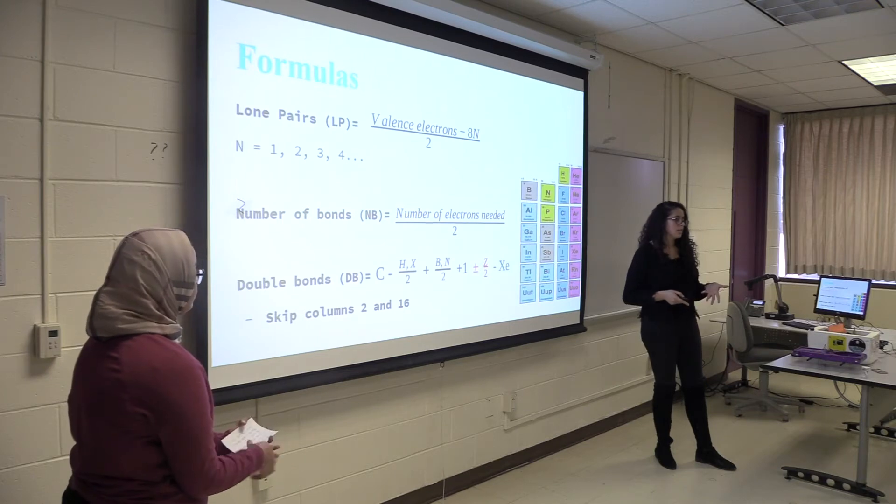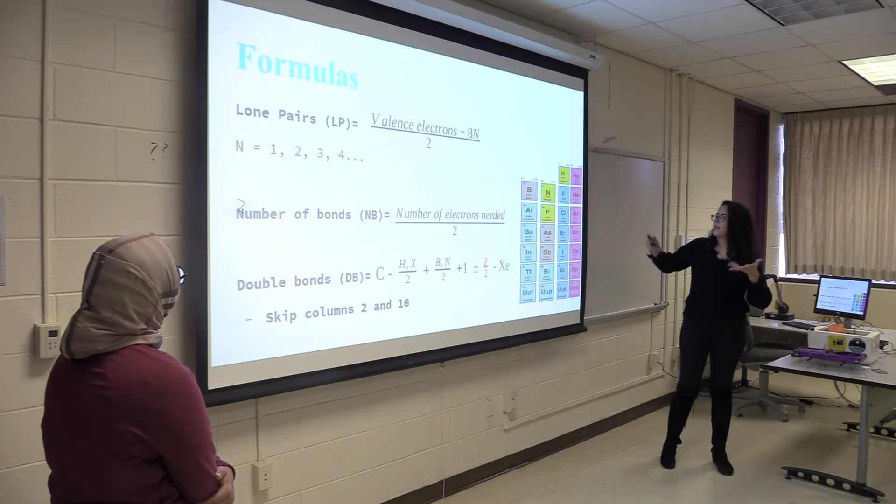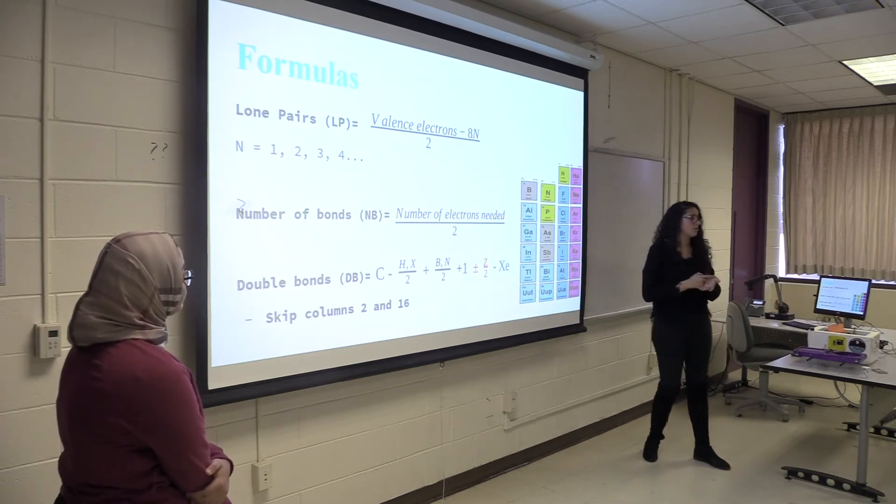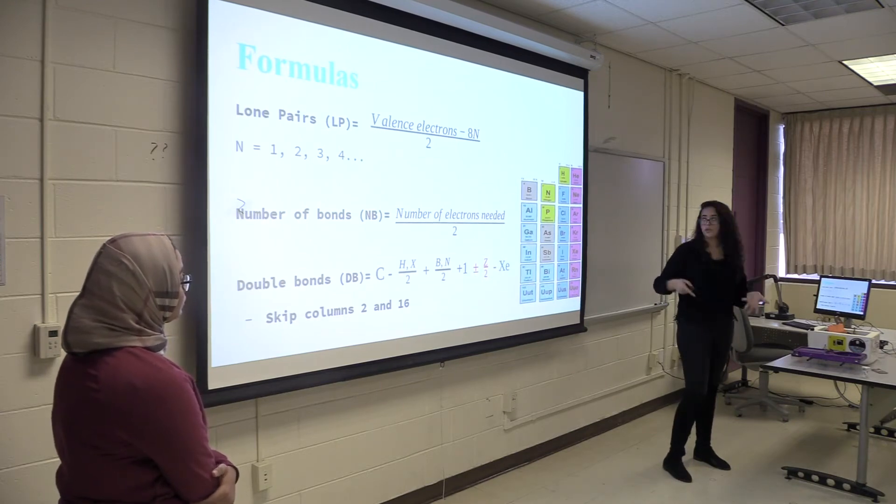The numbers of electrons needed are basically how many more electrons. First you have to look at an atom, for example nitrogen, which has five valence electrons. You have to know how many more it needs to complete its octet so it would need three.